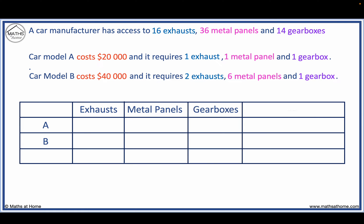This information is summarised in the table below. The constraints are that there are only a limited number of each part. We must use less than or equal to 16 exhausts, 36 metal panels and 14 gearboxes.